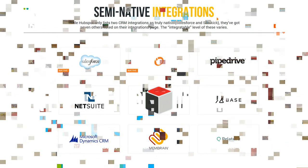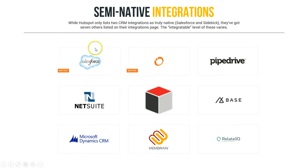Let's jump into it. HubSpot, if you look at their integrations page, they specifically list out nine different CRMs that they integrate with. They've got two native integrations: Salesforce and Sidekick. Salesforce, because it's such a huge player in the space, and Sidekick because HubSpot owns them. These are both native. If you go to HubSpot, they've got very well-written, well-laid-out plans that show you how to do that implementation. It's point-and-click, but there's lots of steps, and so it walks you through that.